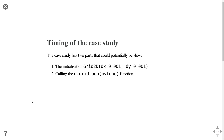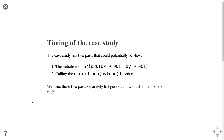Let's time our case study. We have two parts of our program that could be slow. The first is the initialization of our grid, where we created large NumPy arrays with x- and y-coordinates. The second is the grid loop function, where we loop over all nodes and call our function. We time these separately to figure out how much time is spent in each of them.